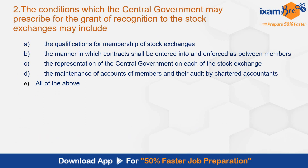Question number 2: The conditions which the central government may prescribe for the grant of recognition to the stock exchanges may include — the correct answer here is E, all of the above. All of these can be included in the conditions for grant of recognition to a stock exchange. This is as per section 4, subsection 2 of the Securities Contract Regulation Act.